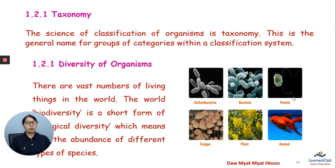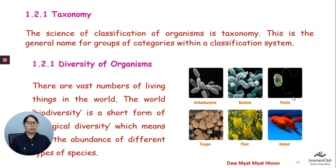In other branches of biology, there are 20 other branches of biology. What is taxonomy? Taxonomy is the science of classification of organisms. Classification is called taxonomy.